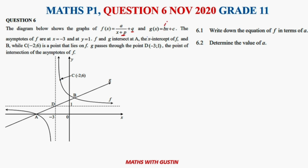We're given a straight line where b is our gradient — you may be used to it as m, but in this case they give it as b. The asymptotes of f are x = -3 and y = 1. Then they say g intersects f at point A and also at point B. C is just a point on f, and g passes through D, which is the intersection of the lines of asymptotes at (-3, 1).